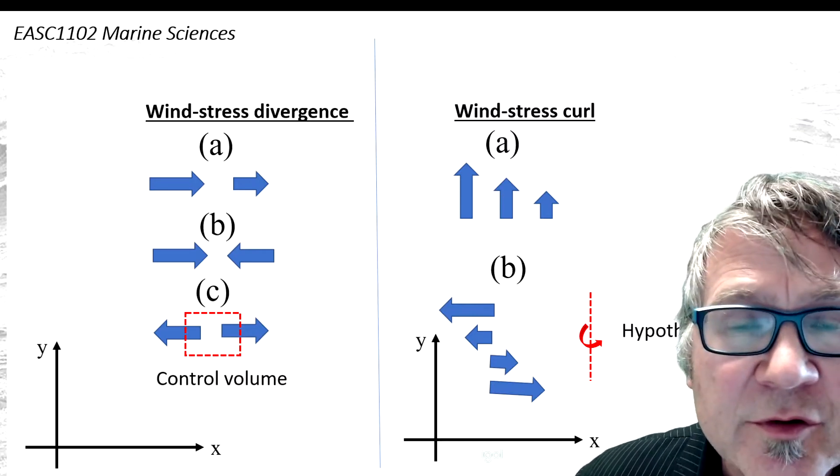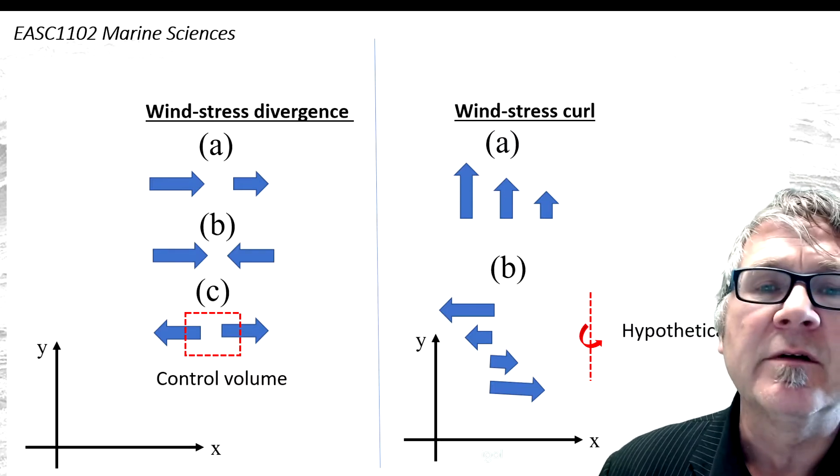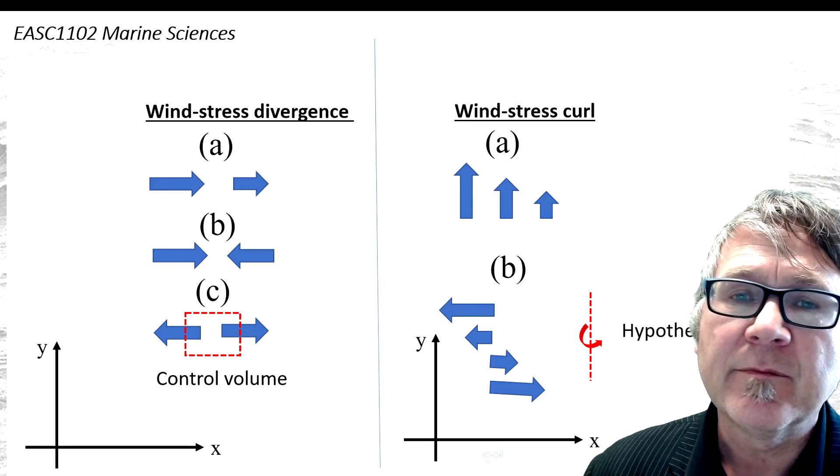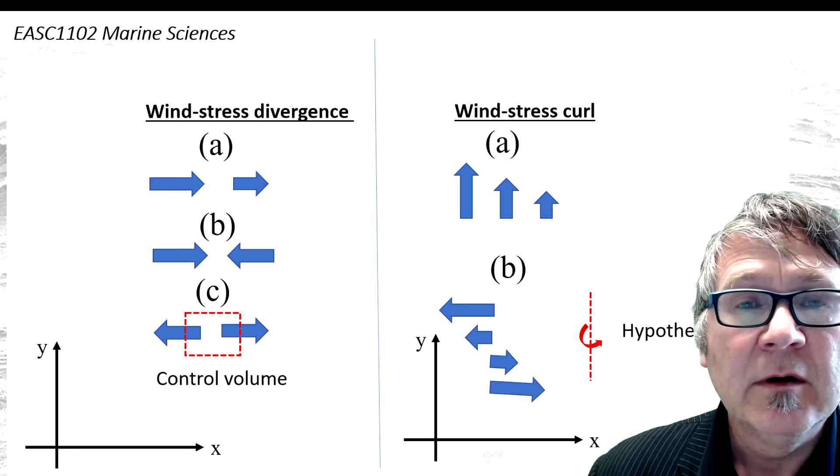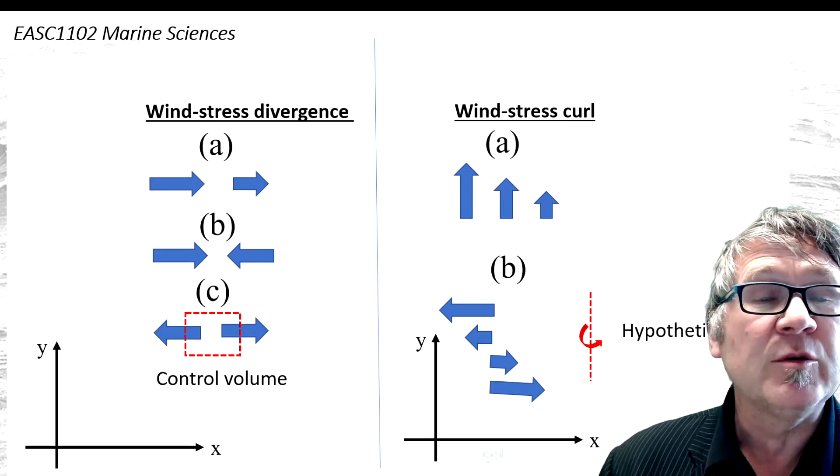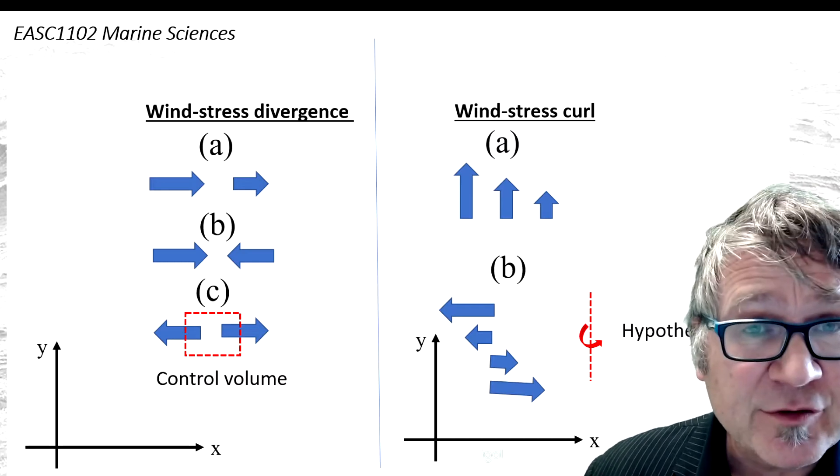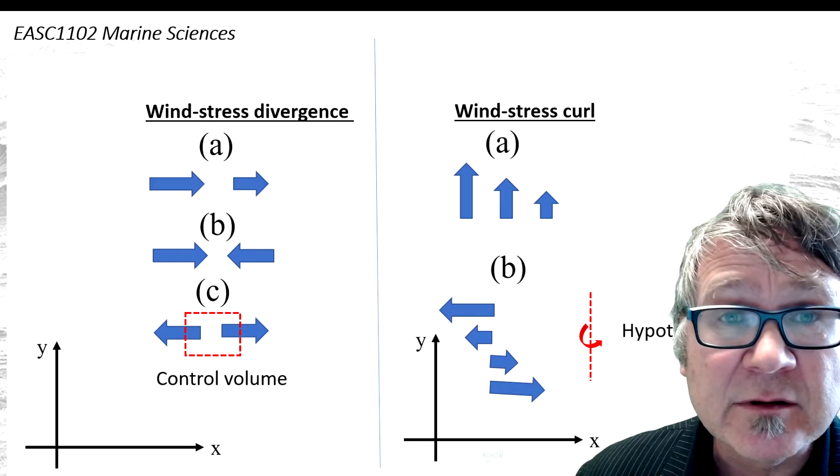The distribution of horizontal winds can lead to two different scenarios. On one hand, you can have a situation where the wind creates a horizontal divergence or convergence.